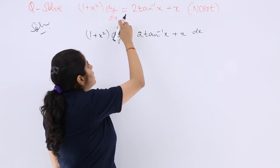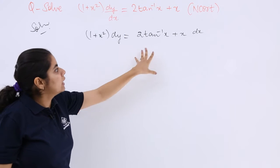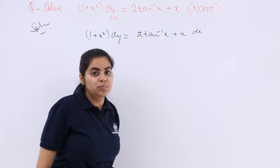Now what will happen is this dx is going to the other side and 1+x² is there that will shift to both of these terms. Why?